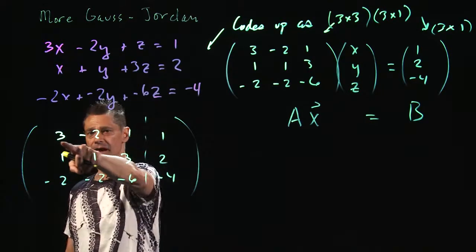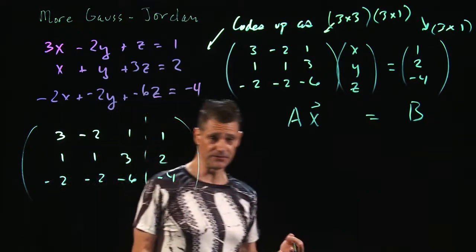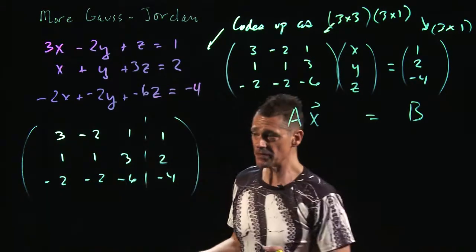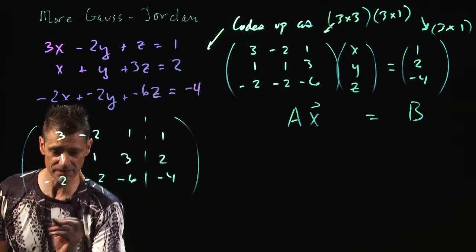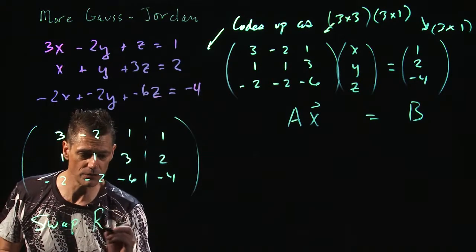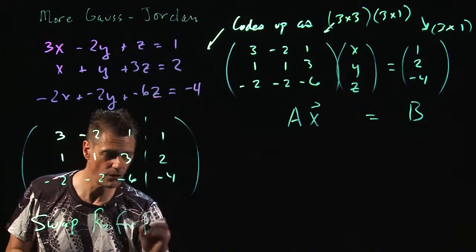So because if I divide by 3, I'm going to get fractions, and I am doing this by hand, I'm going to just swap these. I may end up getting fractions anyway. But for this, I'm going to swap row 2 for row 1. Perfectly legitimate procedure.